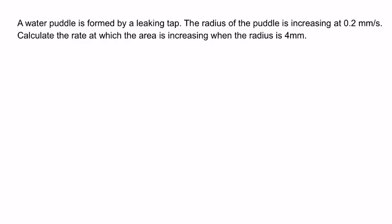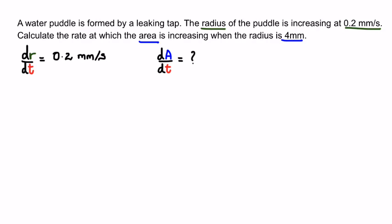Here's the first question: a water puddle is formed by a leaking tap. The radius of the puddle is increasing at 0.2 millimeters per second. Calculate the rate at which the area is increasing when the radius is 4 millimeters. So we can write dr/dt = 0.2 mm/s, and we're looking for da/dt when r = 4 mm.